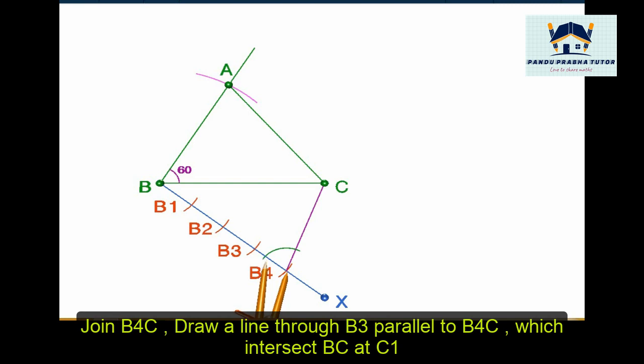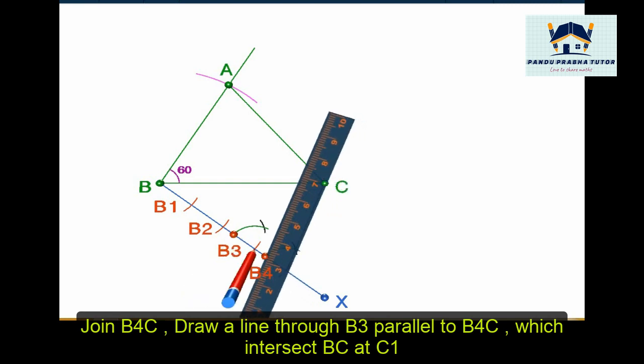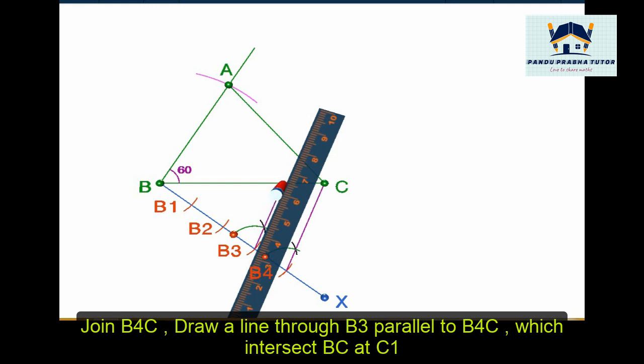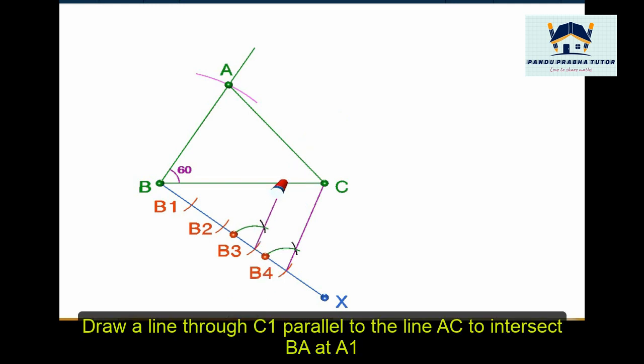Draw two arcs, one at B4 and another one at B3, with the same radius. Mark these two points. Now take the length of the arc. With the same length, draw another arc. Now join the line which touches base BC at C dash. Name that point C dash.